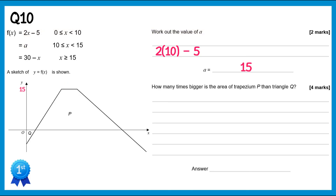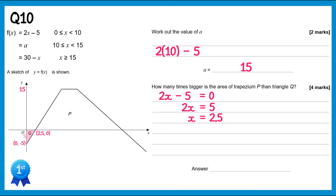For the second part we need to find how many times bigger the trapezium area is than the triangle area. For the triangle, the function 2x minus 5 has intercept -5, giving the point (0, -5). Setting 2x minus 5 equals 0 gives x equals 2.5, so the point (2.5, 0). The triangle has height 5 and base 2.5. Area equals one half times 2.5 times 5, which gives 6.25 square units.